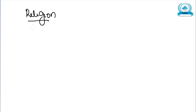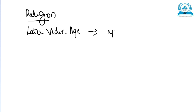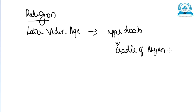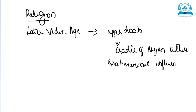Now let us move on to the next point: religious and philosophical ideas during the Later Vedic Age. In the Later Vedic Period, the upper Doab emerged as a cradle of Aryan culture under Brahminical influence. There was significant Brahminical influence during this time.